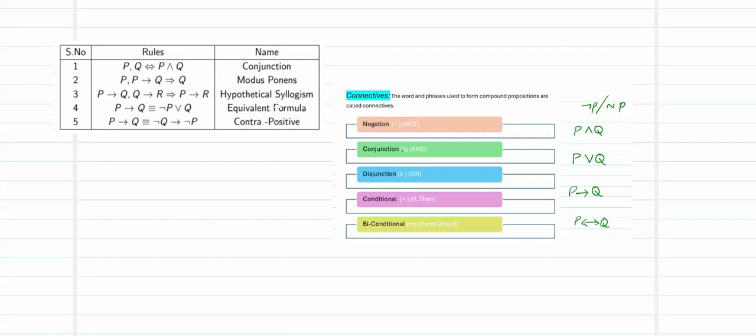Memorizing these five formulas will help us solve the problems in an easier way. When converting a problem statement into hypotheses and then solving for it, we need to know the basic connectives we are using: negation, conjunction, disjunction, conditional, and biconditional.